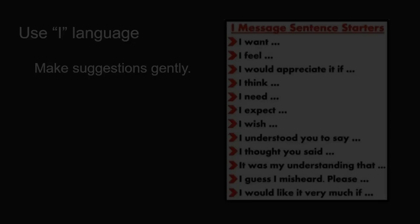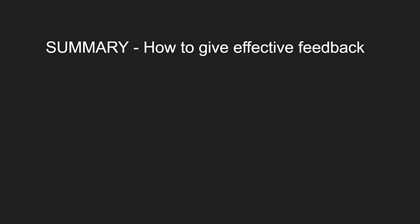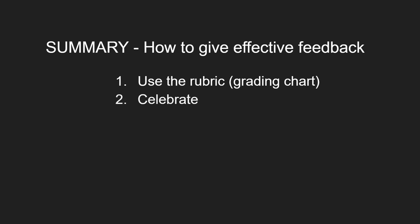So let's review the four tips of how to give effective feedback. Number one, use the rubric or the grading system. Number two, celebrate — find something the writer did well and tell them. Number three, suggest — find something the writer can improve and tell them. And finally, when you tell them, use I language to make your suggestions more gentle.